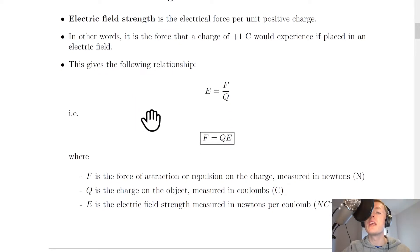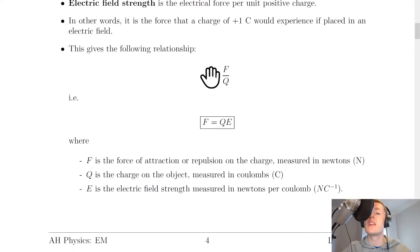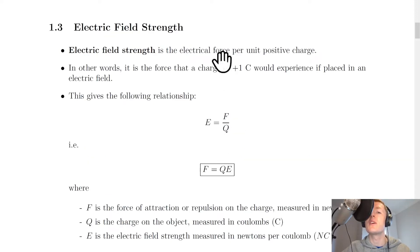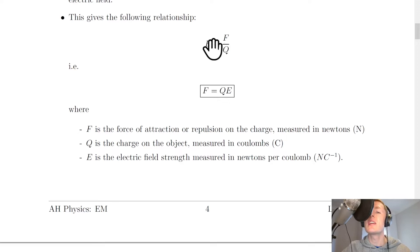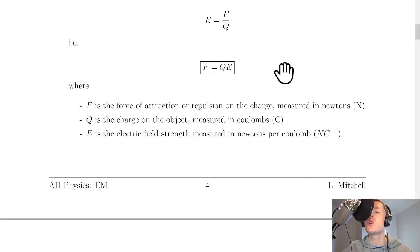This gives us the following relationship: electric field strength E equals the force divided by the charge. This comes from the definition that electric field strength is the electrical force F per unit positive charge Q, or the force per Coulomb. If we rearrange E equals F over Q for the force F, then you get the relationship F equals QE, which is on the relationship sheet in the exam.